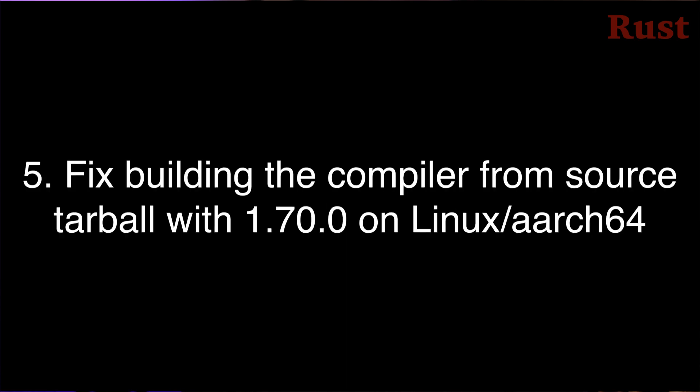Number five: if you were on Linux with an ARM64 processor and you tried to use Rust 1.70.0 to build Rust 1.71.0 from a source tarball, then it wouldn't work. This has been fixed with Rust 1.71.1.